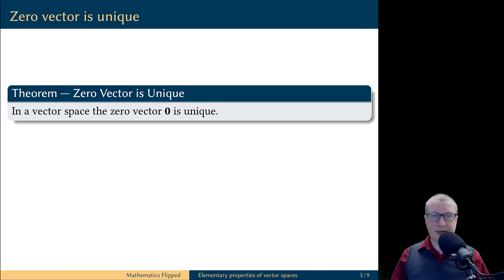Each vector space must have a zero vector. Let's prove that this zero vector is in fact unique. There is a simple pattern for proving that an object with certain properties is unique: we assume there are two such objects and we prove that they are equal to each other.